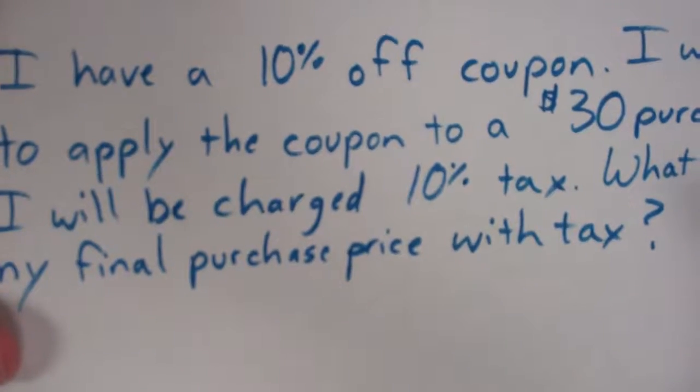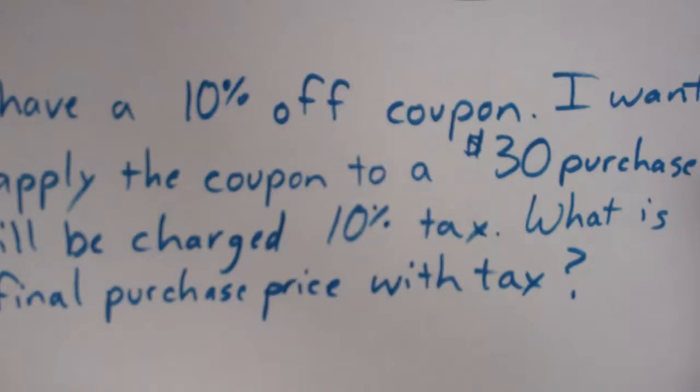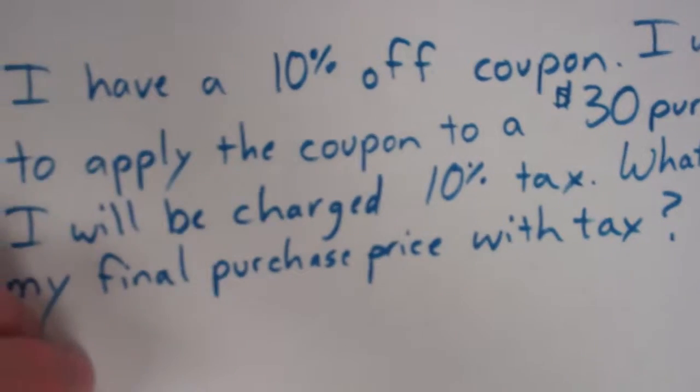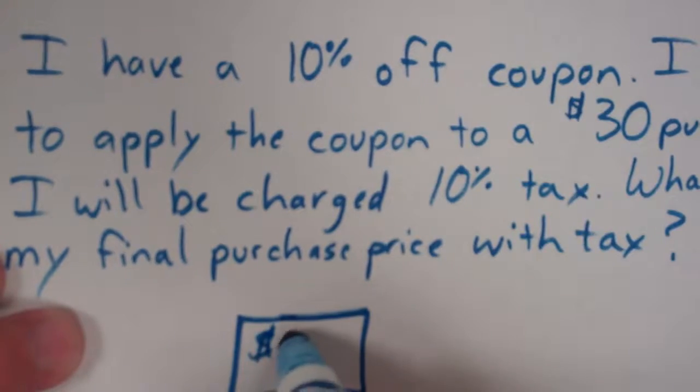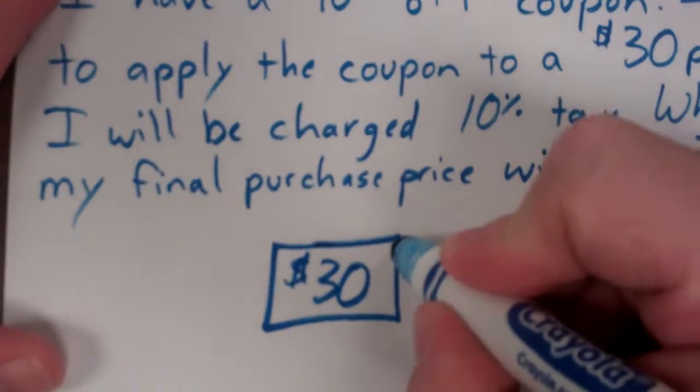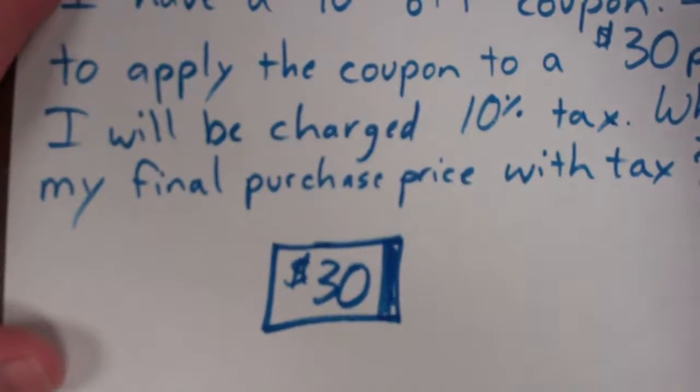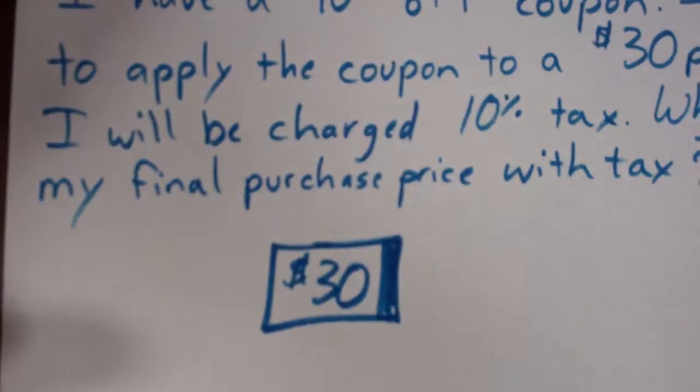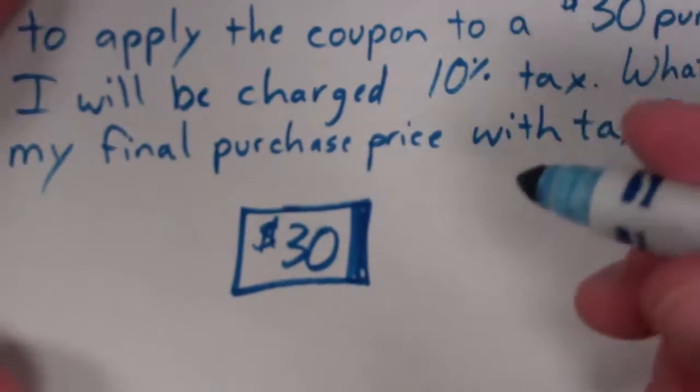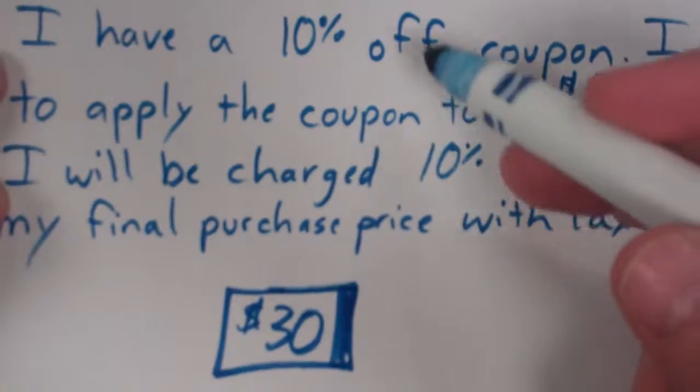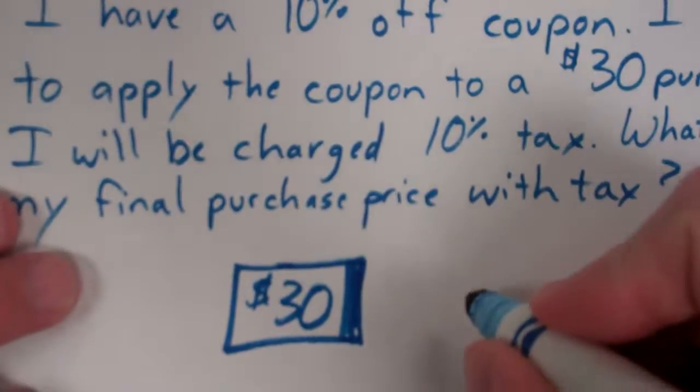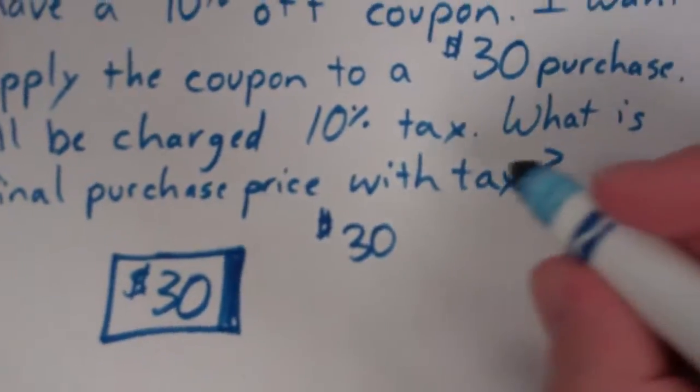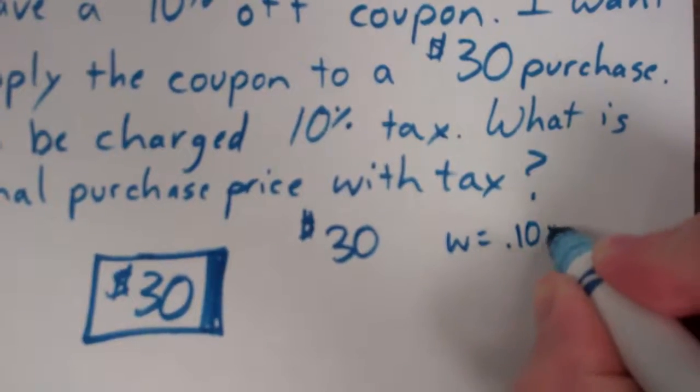So with that in mind, let's look at another problem. I have a 10% off coupon. I want to apply the coupon to a 30 dollar purchase. I'll be charged 10% tax. What is my final purchase price with tax? Well, a lot of people are going to look at it and say, okay, well I'm buying a 30 dollar item. They're going to find out 10% of that and they're going to chop it off, but then they're going to find 10% of that and add it right back on. They took it off as a discount, they added on as a tax, so it's going to be 30 dollars.